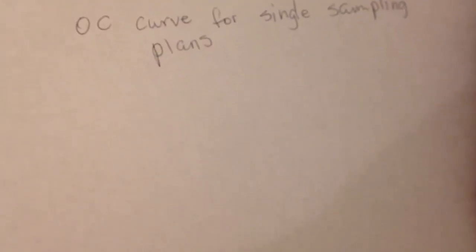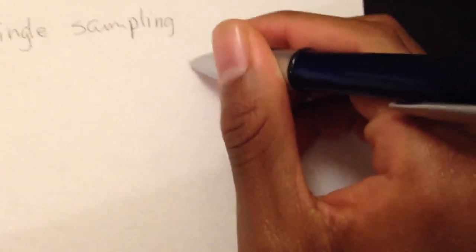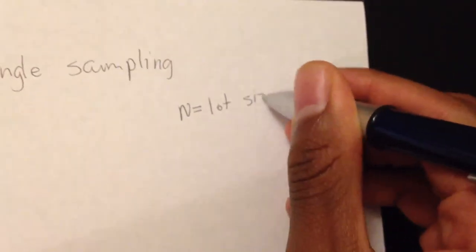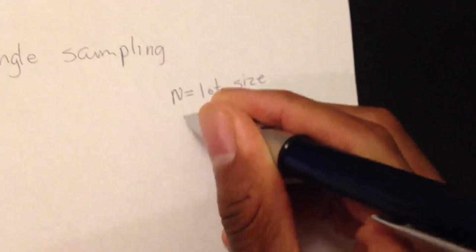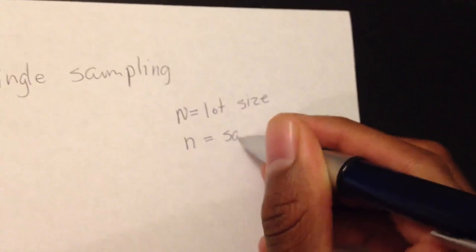So what you plot is you find a percentage of non-conforming and then you go over and up and that will give you the percent chances of that lot being accepted or not. Usually you're given three values: you're getting an N which is your lot size, you're given a lowercase n which is your sample size.